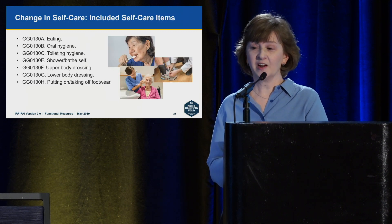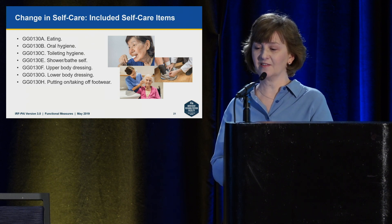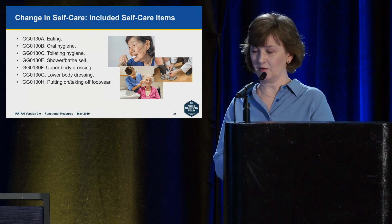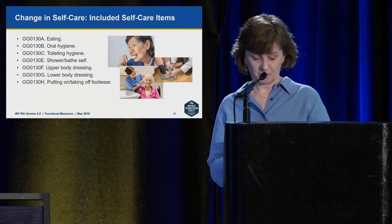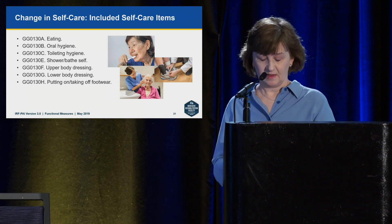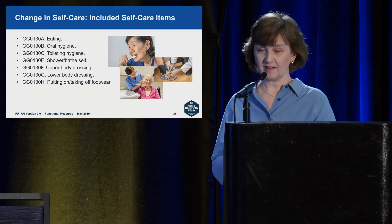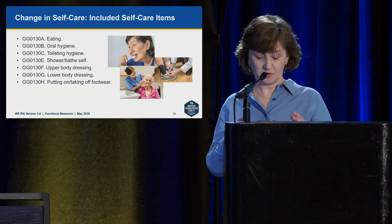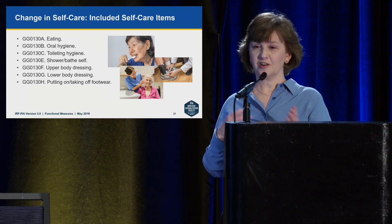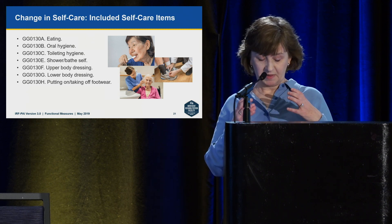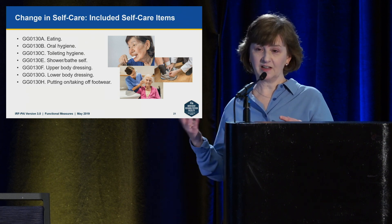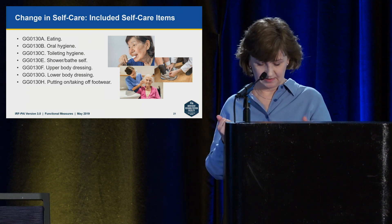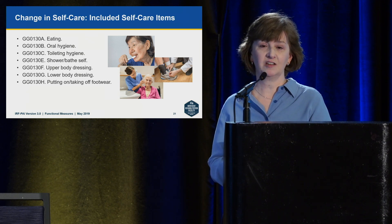The change in self-care activities includes all seven self-care items: eating, oral hygiene, toileting hygiene, shower/bath self, upper body dressing, lower body dressing, and putting on/removing footwear. With a 6-level rating scale and 7 activities, the admission score ranges from 7 to 42, and the discharge score also ranges from 7 to 42. Someone who comes in at the lowest level gets a 7 and can gain up to 35 units. Looking at national data, the average change in self-care across all IRFs is 11.5 units.